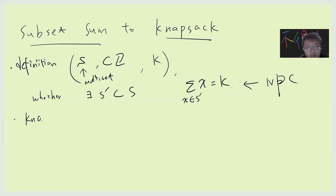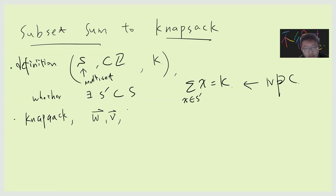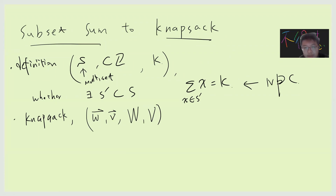Let me describe the knapsack problem. Knapsack is very easy. Suppose you get some weight vector w and a value vector v, and you get a large W and a large V. So w is a weight and v is a value, and then you can choose possible elements from the items.